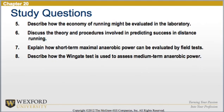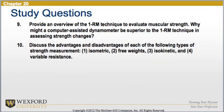7. Describe how the economy of running might be evaluated in a laboratory. 8. Discuss the theory and procedures involved in predicting success in distance running. 9. Explain how short-term maximal anaerobic power can be evaluated by field test. 10. Describe how the Wingate test is used to assess medium-term anaerobic power. 11. Provide an overview of the 1-rep max technique to evaluate muscular strength — why might a computer-assisted dynamometer be superior to the 1-rep max technique in assessing strength changes? 12. Discuss the advantages and disadvantages of each of the following types of strength measurements: isometric, free weights, isokinetic, and variable resistance.